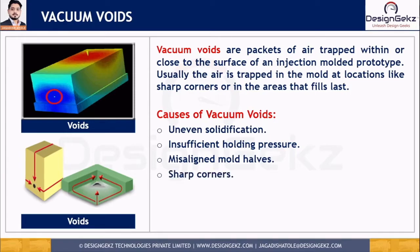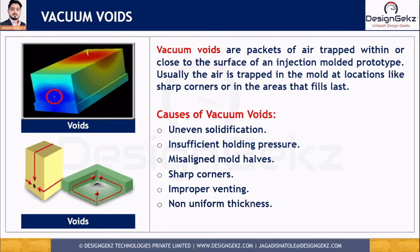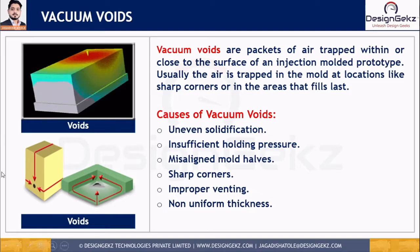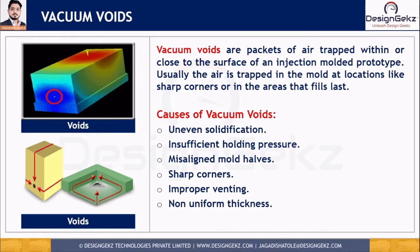Vacuum voids can also be caused by sharp corners, improper venting, and non-uniform thickness. Because of sharp corners, air may get trapped during mold filling — as shown in this corner area where the air may get trapped during filling. Voids will also occur where the trapped air fails to escape due to improper venting or in areas that fill last. If proper vents are not provided at the correct location, vacuum voids will occur. Non-uniform thickness may also result in either sink marks or voids.